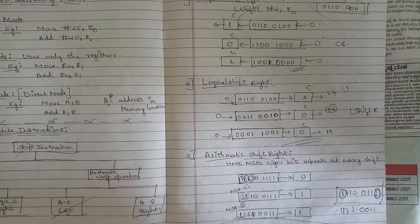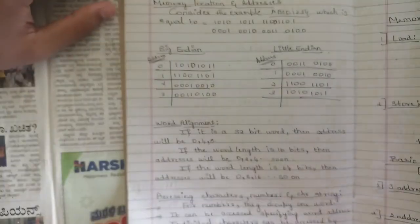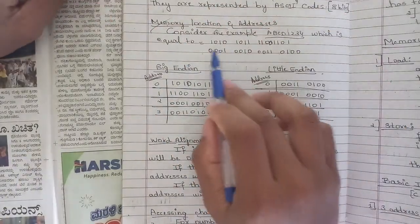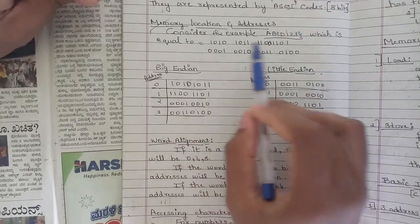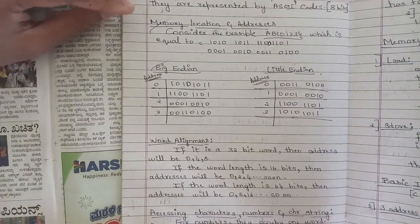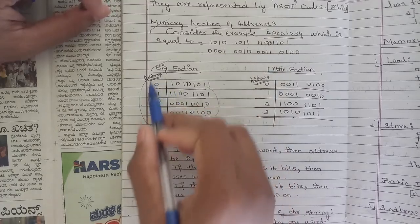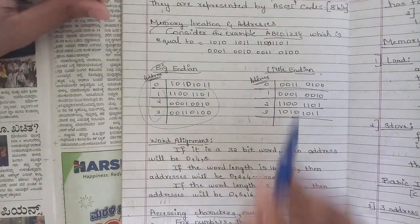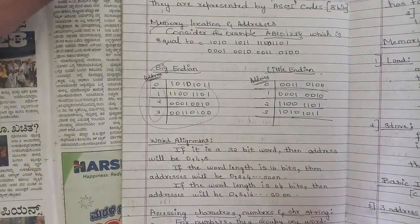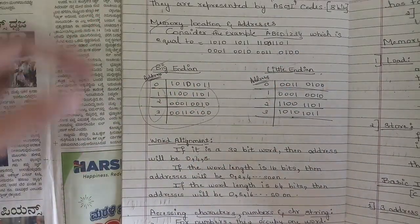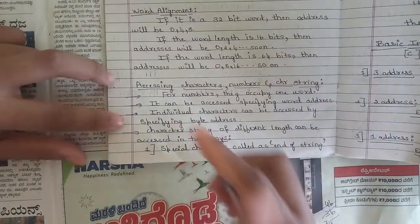One more question is related to little endian and big endian. For example, consider the value ABCD1234, which equals a specific binary number. You should represent it in both big endian and little endian forms, writing the memory addresses and separating the MSB and LSB accordingly. A detailed explanation is available in our model paper solutions. One question on big endian and little endian will be fixed and asked.